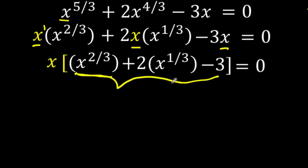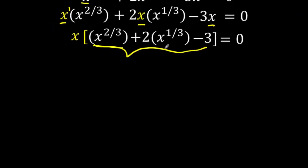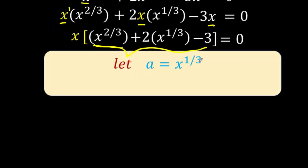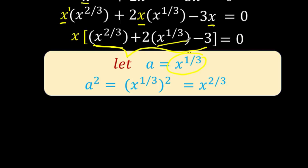This resulting part is quadratic in form — if this happened to be 2 instead of 2 thirds, and this happened to be 1 instead of 1 third, then you'd have a quadratic equation in the form a squared plus 2a minus 3 equals 0. So let's do the necessary substitution. We look at the literal coefficient of the middle term, that is x raised to 1 third, and we let that equal a. It follows that a squared is x raised to 1 third raised to the second, which simplifies to x raised to 2 thirds. So this part can now be written in terms of the variable a.